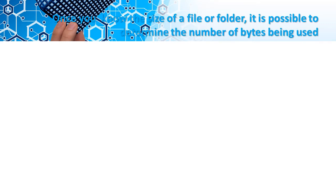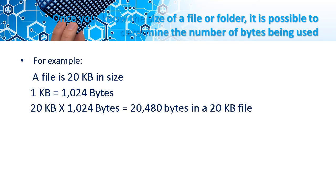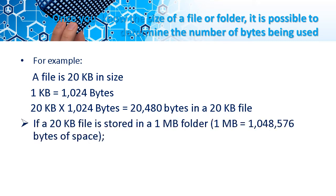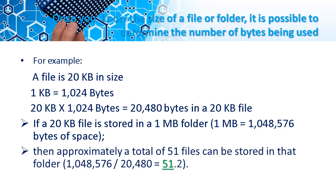Once you know the size of a file or folder, it is possible to determine the number of bytes being used. For example, a file is 20 kilobytes in size. 1 kilobyte is equal to 1,024 bytes. 20 kilobytes times 1,024 bytes equals 20,480 bytes. If a 20 kilobyte file is stored in a 1 megabyte folder, then approximately a total of 51 files can be stored in that folder.